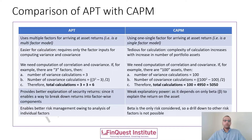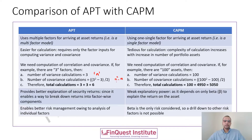Let's take a simple example. Whenever we have to do a complete analysis of a certain portfolio, we need to take into consideration the correlations and covariance which exist across various assets. The number of variance calculations are 3, assuming a 3-factor portfolio. The number of covariance calculations will be (3² − 3) / 2. The general formulas are: number of variances = n, and number of covariance calculations = (n² − n) / 2. So the total number of calculations is just 3 + 3 = 6. That's not a very heavy load on the system.